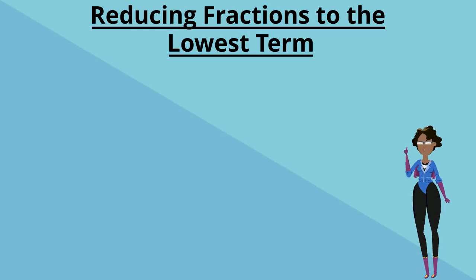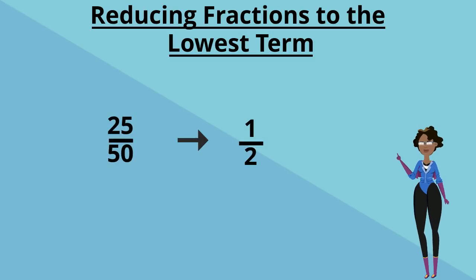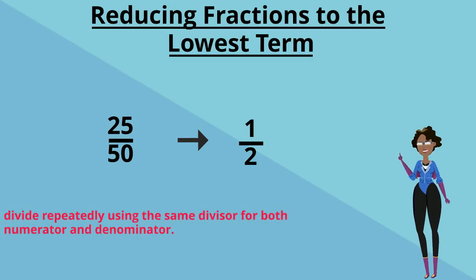Reducing a fraction to its lowest terms means making the fraction as small as possible. To reduce a fraction, you divide repeatedly using the same divisor for both numerator and denominator. There should be no remainders.